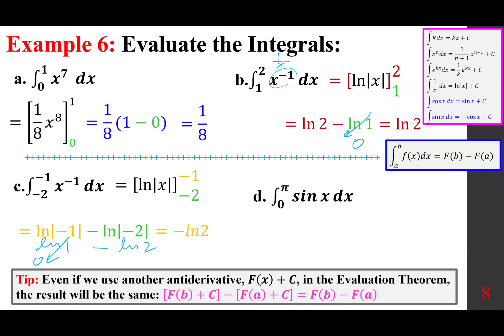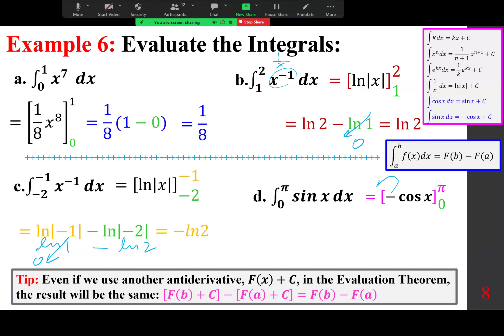The integral of sin x is −cos x, evaluated from 0 to π. Factor the negative outside: −[cos π − cos 0] = −[−1 − 1] = −(−2) = 2.